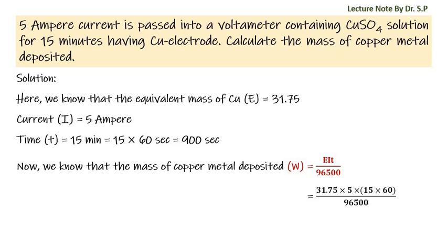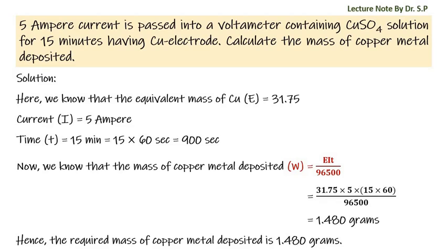Finally we get 1.480 grams. Hence the required mass of copper metal deposited is 1.480 grams.